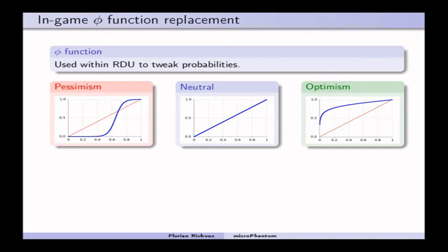A fourth improvement, concern in game phi function replacement. So, I didn't speak about phi function yet, so I will do it now. In the Ranked Dependent Utility formula, you have phi functions that are probability deformation functions that are used to tweak probabilities. And this is something very convenient, because you can model some behaviors like pessimism and optimism before taking a decision.